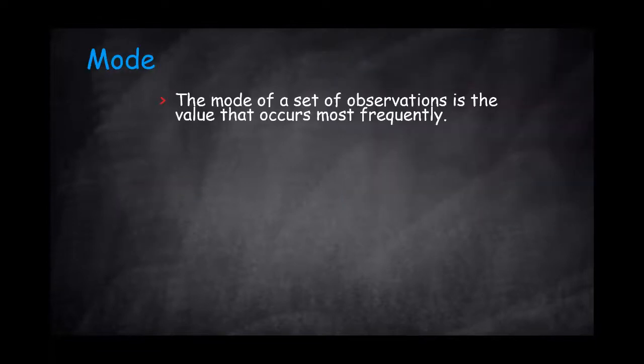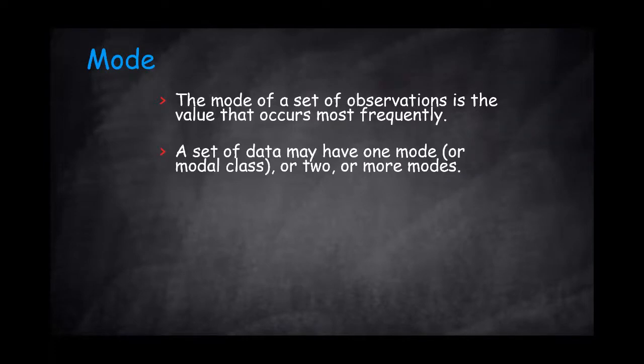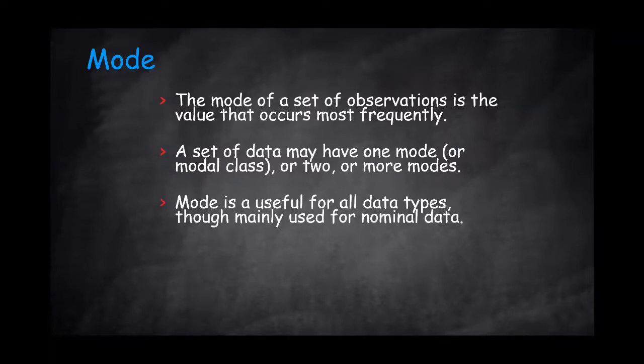The mode of a set of observations is the value that occurs most frequently. A set of data may have one mode or more, sometimes none. Mode is useful for all data types, but mainly we'll use it for nominal data, when the only thing that we'll be able to do is to calculate frequencies.